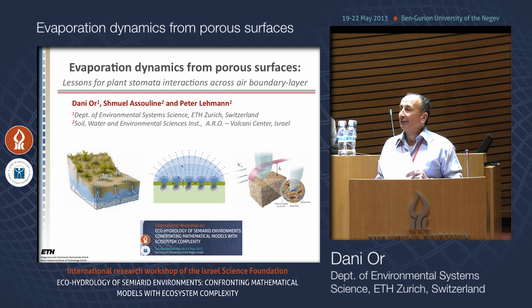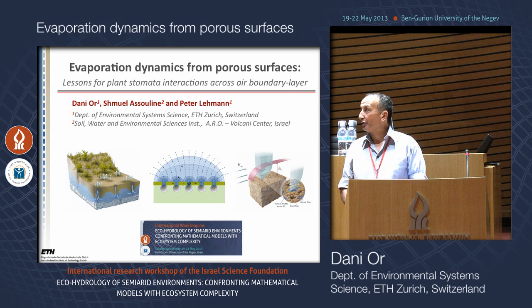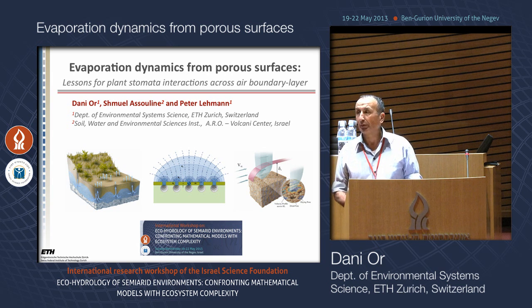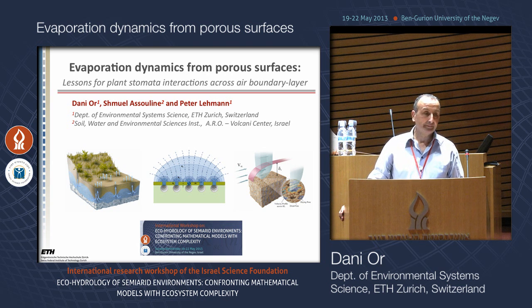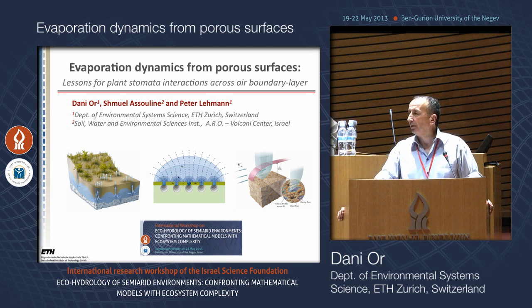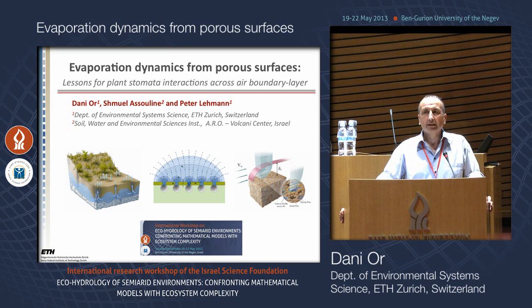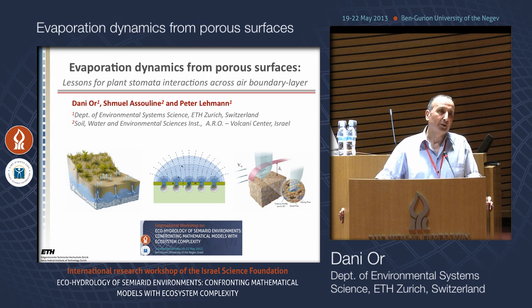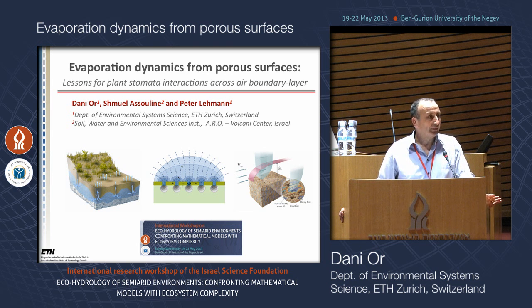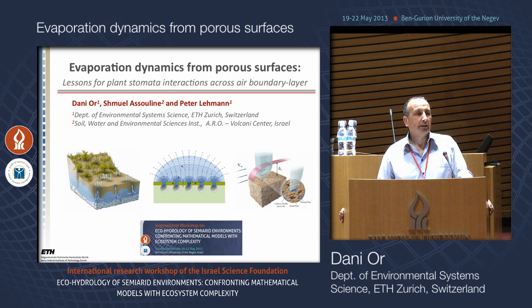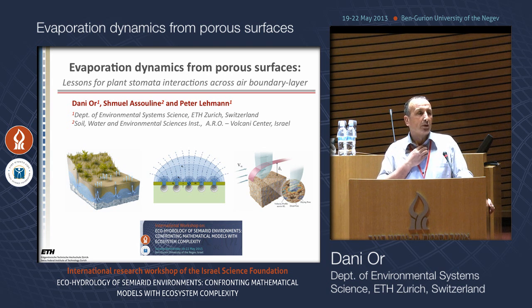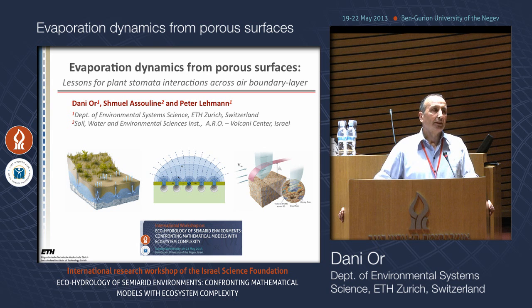Today I'll talk about evaporation from porous surfaces, and I'll try to tell the story of evaporation from the porous medium point of view, simply because much of what we know in textbooks about evaporation tends to focus on the atmospheric side — measuring gradients or evaporation in response to vapor pressure deficit — often treating the porous medium as a passive supplier of vapor. In fact, the interactions within the porous medium and resistances that arise within it play a major role in modulating the fluxes and determining both the dynamics and the ultimate evaporative losses.